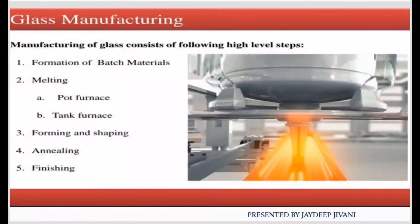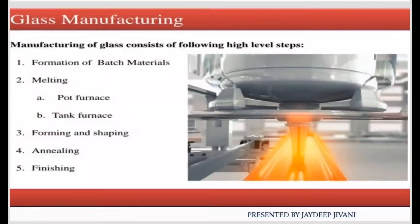The first step is formation of batch material. Second step is melting. Third step is forming and shaping. Fourth step is annealing. And the fifth and last step is finishing. So there are 5 steps required for the manufacturing of glass.